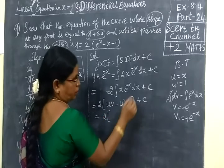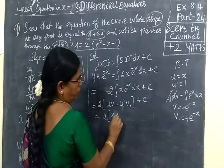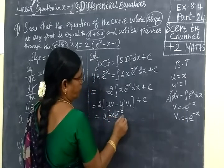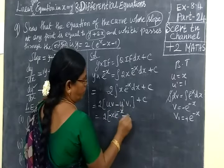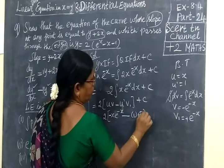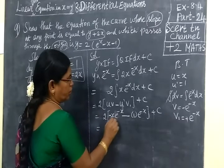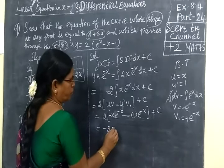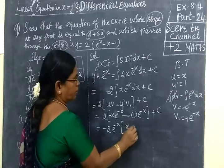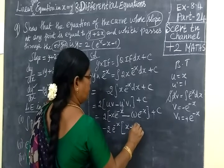Equal to 2 times bracket: u is x, v is -e power -x, then v1 equal to e power -x, so we get x times -e power -x minus 1 times e power -x, which simplifies. Then e power -x terms can be factored out giving -x plus 1, then plus c.